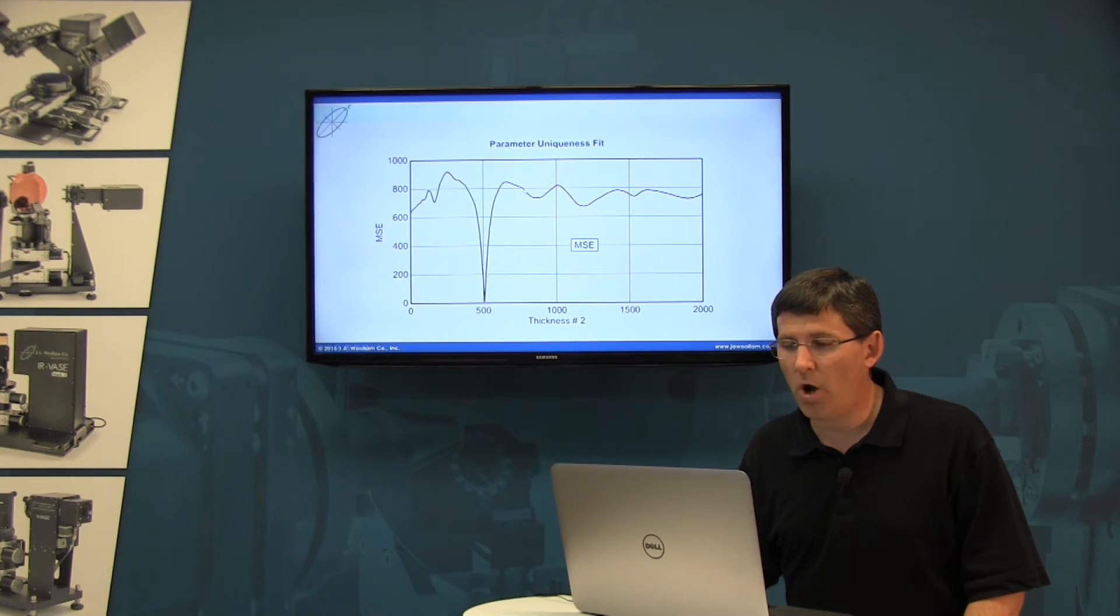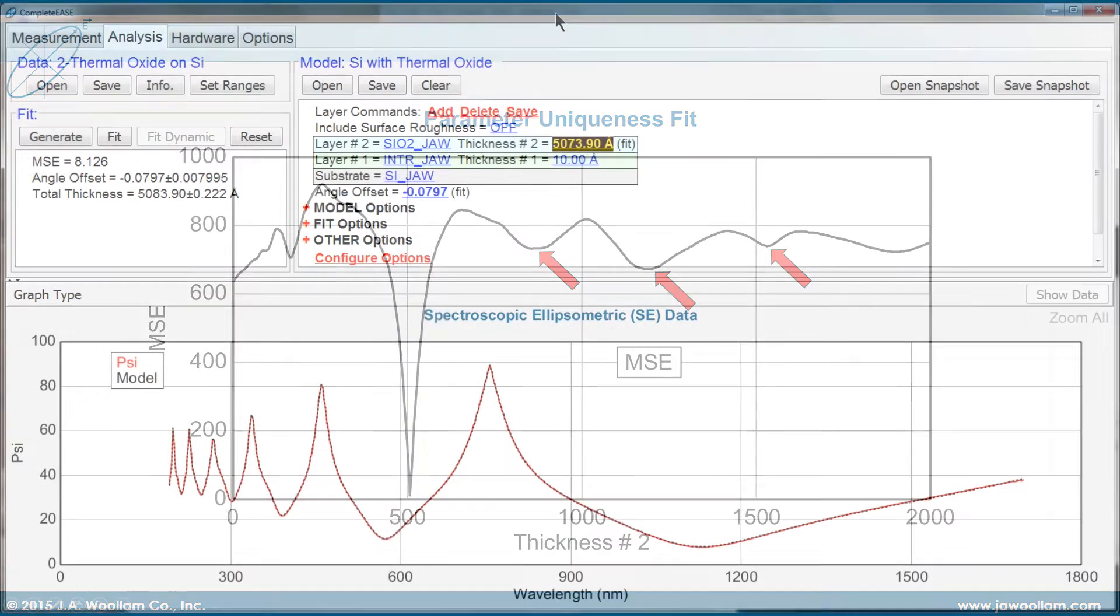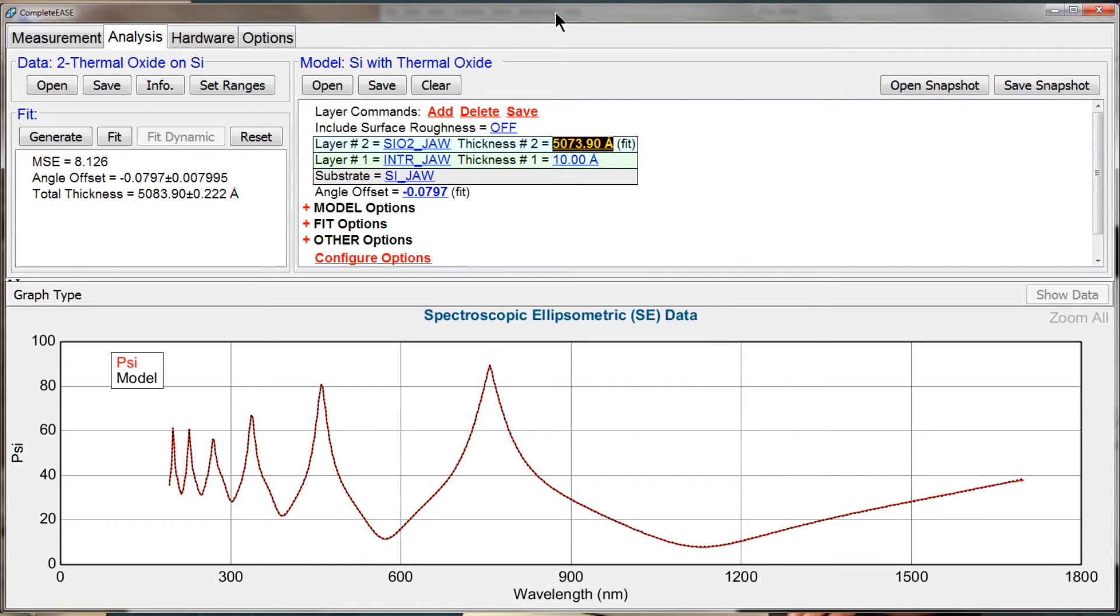But if I start the thickness at the wrong point, it's just as likely to find one of these other minima, which we call local minima. They're not the correct result. And I can demonstrate that in the software.